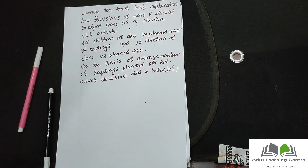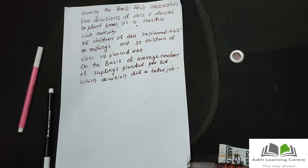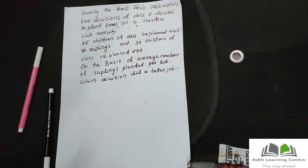During the forest phase celebration, two divisions of class 5 decided to plant trees as a Haritha club activity. 35 children of class 5A planted 245 saplings, and 30 children of class 5B planted 240 saplings. On the basis of average number of saplings planted per kid, which division did a better job? This is the question.